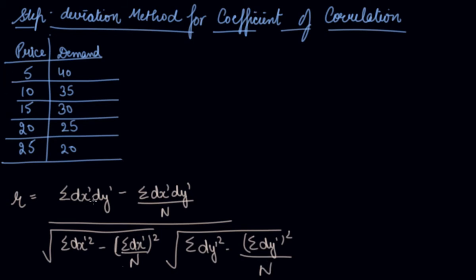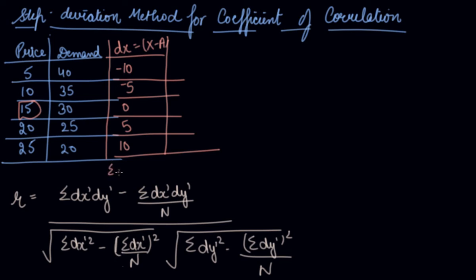Now we have to find out dx', dy', square individually and dx' dy'. Let's find out. Let's take the deviation that is dx from the assumed mean x minus a. The assumed mean we are dealing as 15. So let's take it as minus 10, minus 5, 0, 5 and 10. Now summation dx' dash is 0. dx' dash we will find out by dividing it by common factor. You can see the common factor is 5. This one 0, minus, plus 1 and plus 2. Summation dx' dash is 0.